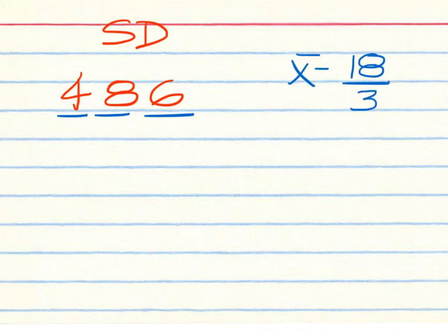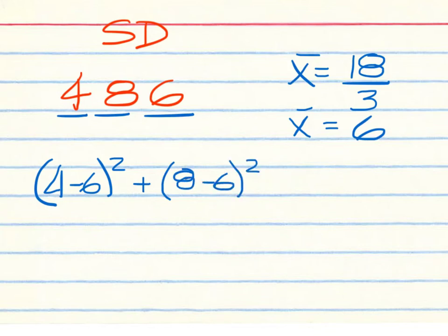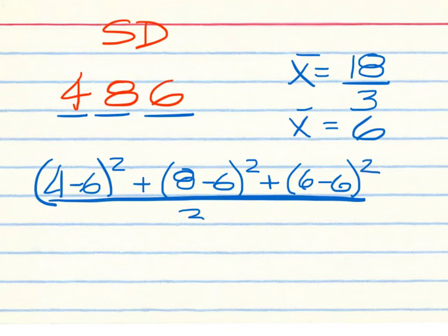In this practice problem, find the standard deviation. The numbers are 4, 8, and 6. Find the standard deviation. And first we have to add them up. That's going to be 4, 12, and then 18. Divided by 3 is going to give us an average of 6. So we need 4 minus 6. Square the result. And 8 minus 6. Square the result. 6 minus 6. Square the result. Divide everything by 3. And then find the square root.